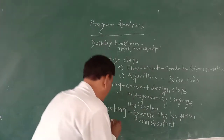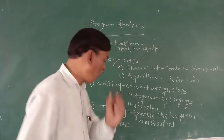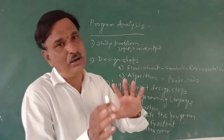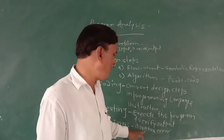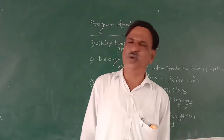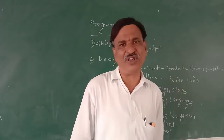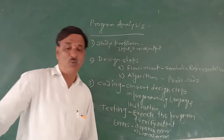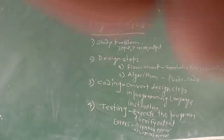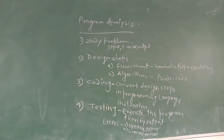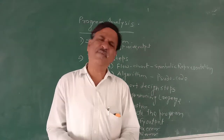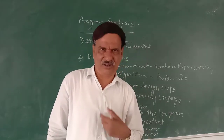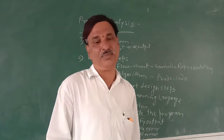If the output is not correct, then there are errors - two types of errors. Number one: syntax error. Syntax error stands for an error in programming language grammar. Programming language grammar is known as syntax. It may be possible that we have violated rules of the programming language, resulting in an error. Number two: logical error. Logical error means a wrong formula. It may be possible that by mistake, the formula is written in the wrong method. So there may be a wrong answer. In case of a logical error, the program is verified once again.